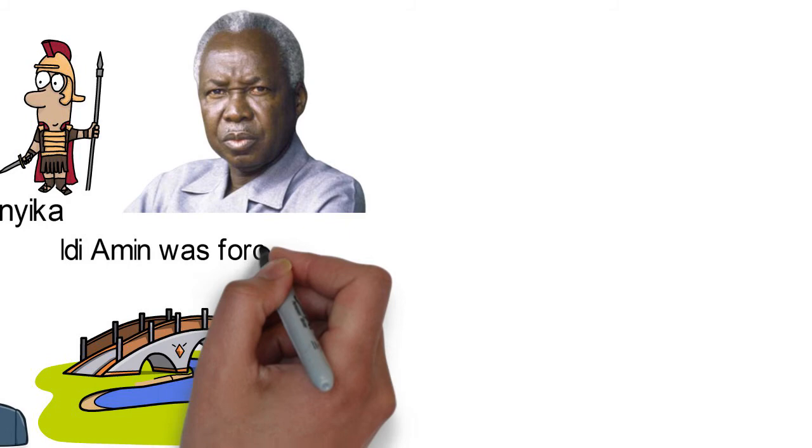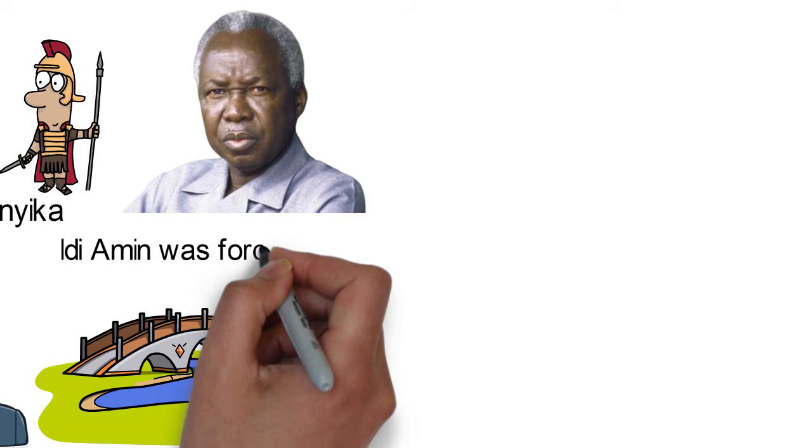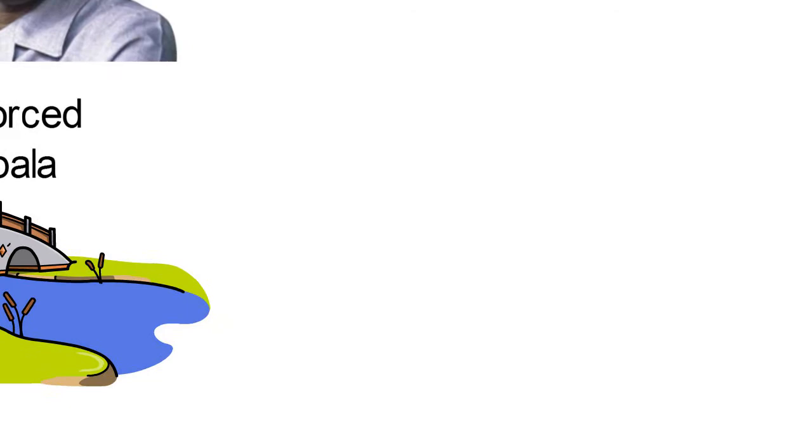On the 11th of April 1979, the Ugandan president, Idi Amin, was forced to leave the capital, Kampala, and immediately ended the Uganda-Tanzania war. The Tanzanian army then took the city, and Amin fled into exile.